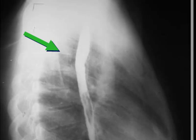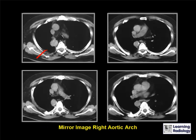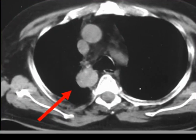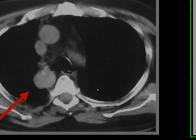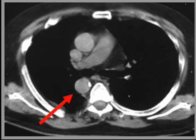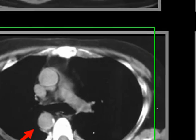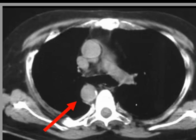On the lateral view, the green arrow demonstrates that there is no forward displacement of either the barium-filled esophagus or air in the trachea. Here is a series of CT images in another patient with a mirror image right aortic arch. You can see that the aortic arch is on the right side and that there is no vessel that passes posterior to the air in the trachea or the esophagus.